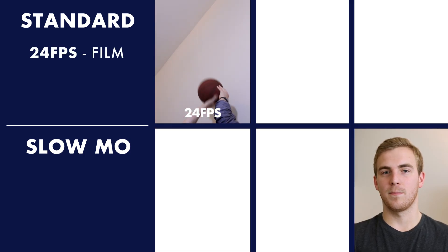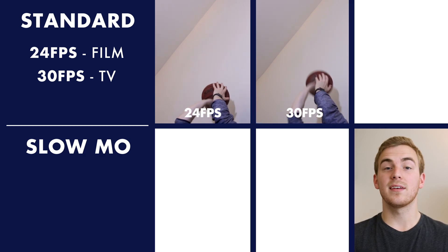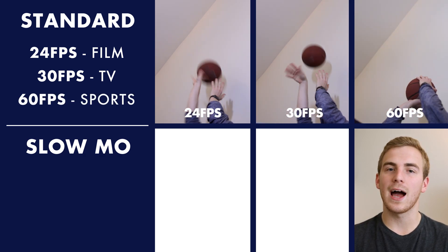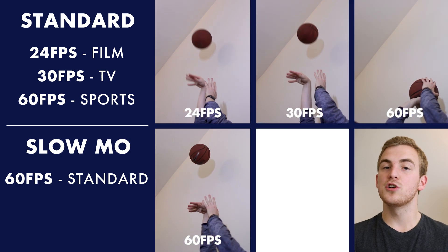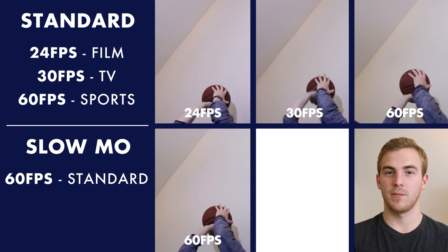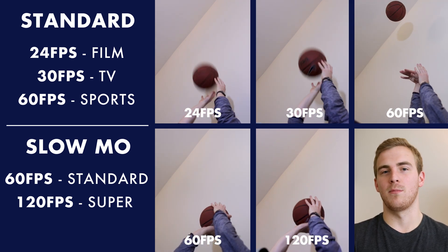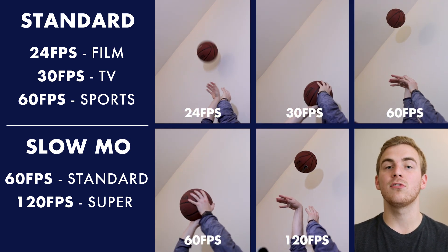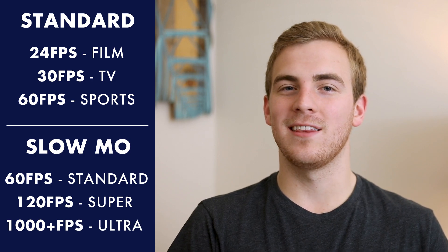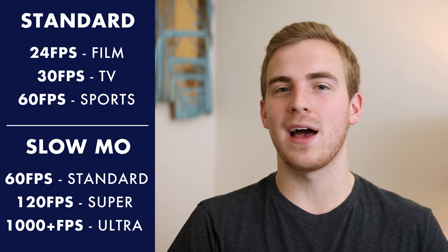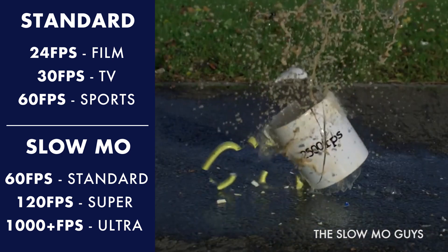Here's an overview of frame rates. 24 frames per second is your cinema standard. 30 frames per second is your TV standard. 60 frames per second is your sports standard — that hyper-realistic smooth look. 60 frames per second slowed down to 24 frames per second is your standard slow motion, 2.5 times slower than normal footage. 120 frames per second is a nice super slow motion — buttery smooth, your cinematic slow-mo B-roll. And 1000-plus frames per second is your ultra slow-mo, like what you see from the Slow Mo Guys on YouTube.